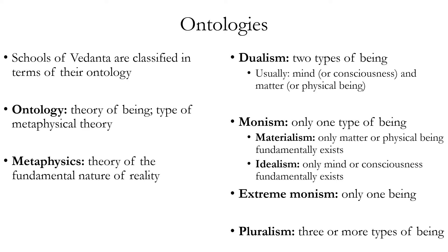The purpose of Vedanta is essentially to renounce the world and attain union with Brahman or the supreme being. The three main schools of Vedanta are classified based on their ontology — a theory of being, specifically a theory of the number and kind of beings that exist in the world. Ontology is a type of metaphysical theory; metaphysics refers to a theory of the basic or fundamental nature of reality, and most obviously includes ontologies but can also include theories of causation.